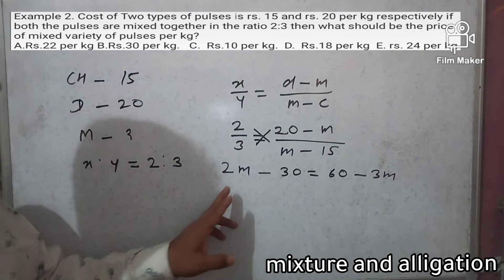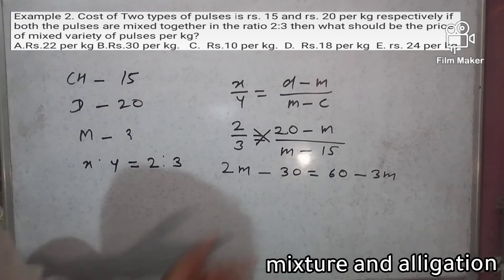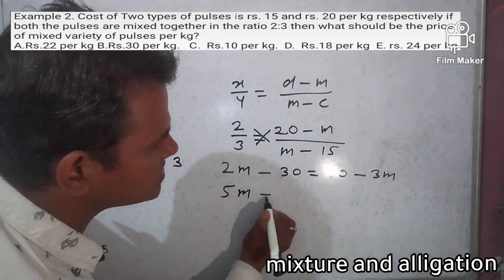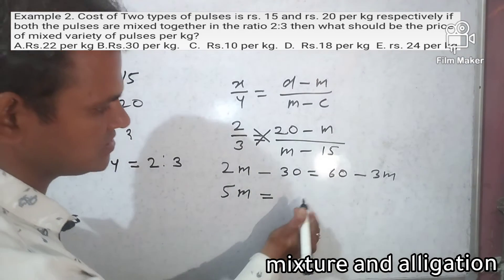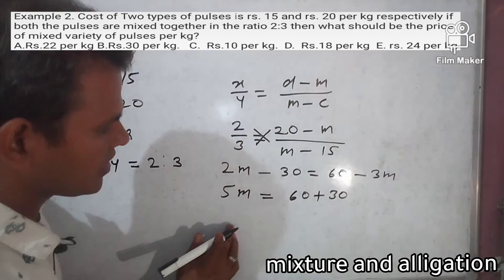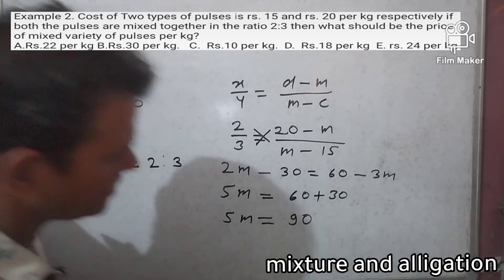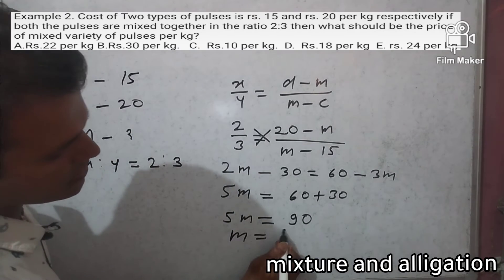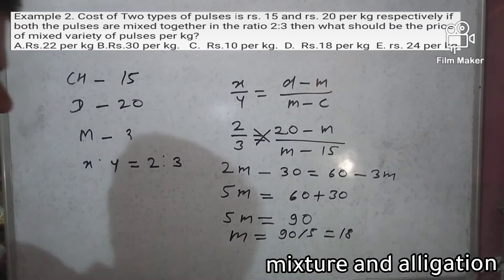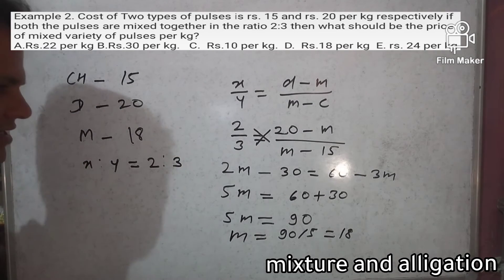From 2m minus 30 equals 60 minus 3m, bringing 3m to the left: 2m plus 3m equals 60 plus 30. So 5m equals 90, and m equals 90 by 5 which equals 18. So the mix value is Rs 18 per kg.